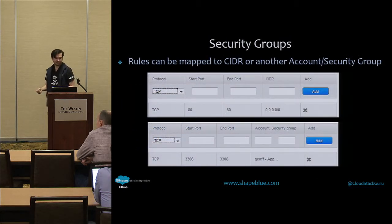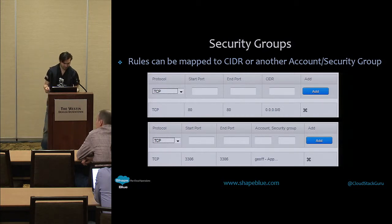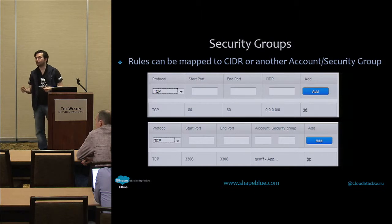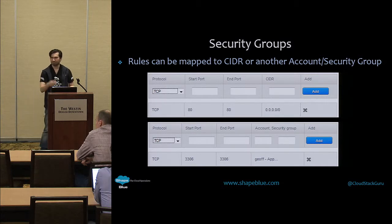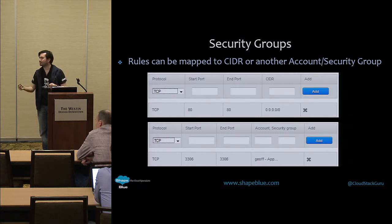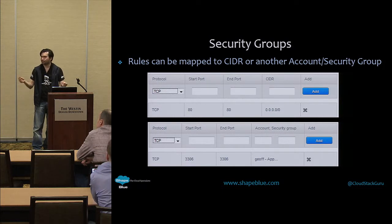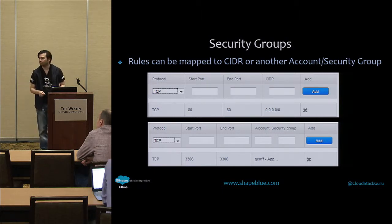Here's a visual of the UI showing how you'd create egress and ingress rules in a security group. You can look at it from a CIDR if coming from an external network routed internally, or from other accounts or security groups — so you can allow access between accounts. You might create different accounts for separation of VMs, but still allow them to communicate by opening your security group rules.